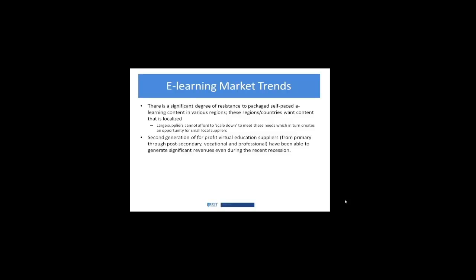Even during the recession, for-profit virtual education suppliers have been able to generate significant revenues. They're piggybacking on the fact that travel budgets are cut and people have to do more with less, creating significant revenues all the way through post-secondary and vocational. Many have done this by taking their legacy systems and repackaging them with new social networking tools. For example, a self-paced asynchronous leadership program with no instructor involvement has been recast with an online community and a secure Facebook-type approach to learning.